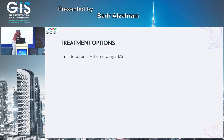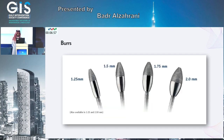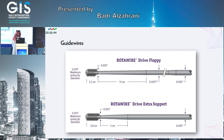Treatment options include rotational atherectomy. The RotaPro is the new device — no more pedal. You can set the RPM on the console. It comes in different burrs starting from 1.25 up to 2.5. Up to 1.75 burr, you can use 6 French guides; larger burrs require 7 French. There are two Rota wires: the Rota floppy and the extra support Rota wire.